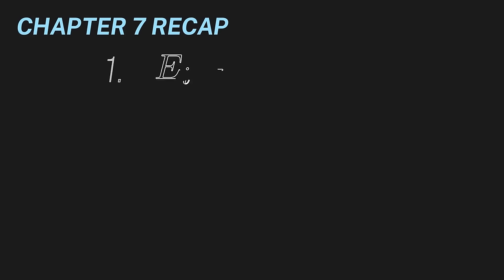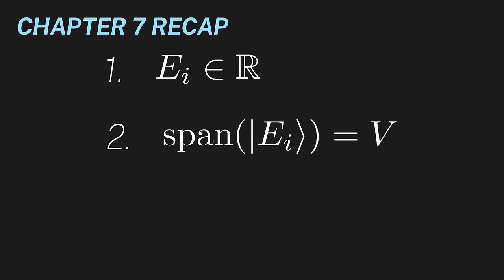First, the eigenvalues must be real, since measured quantities are obviously real. Second, the eigenvectors must span the whole space, since each quantum state must carry some value for the observable.